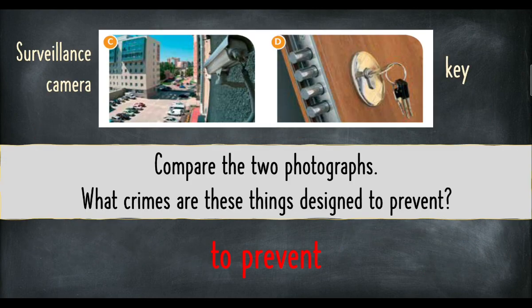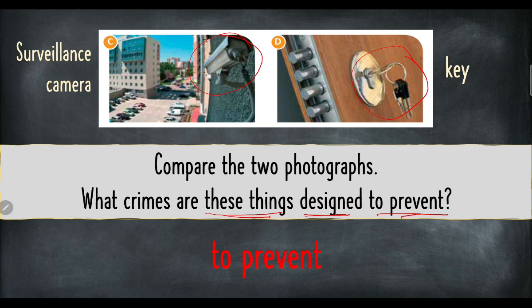The next two pictures: the first one is a surveillance camera and the second is a key. Same instruction — compare the two photographs using the same expressions as before. The next question: what crimes are these things designed to prevent? The surveillance camera is facing a parking lot — so what is it trying to prevent? And the key — you can come up with something. What is it designed to prevent?